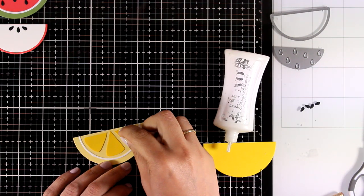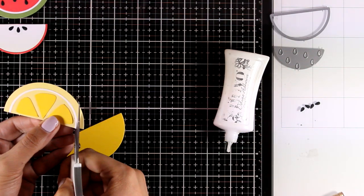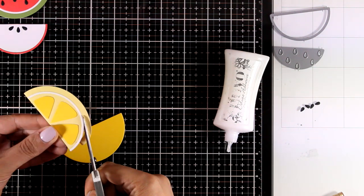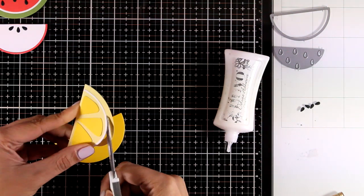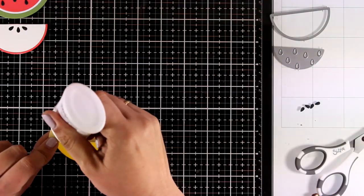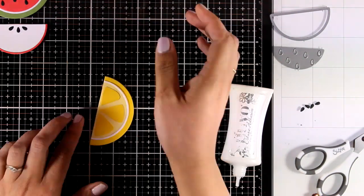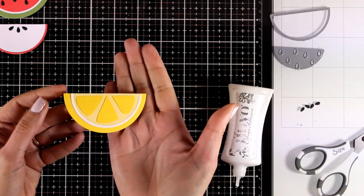My lemon slice is ready. I wanted to have the outside edge slightly darker, so I'm using my scissors to chop that off. Then I'm going to stick that directly on the darkest shade of yellow, and my lemon slice is ready to go.